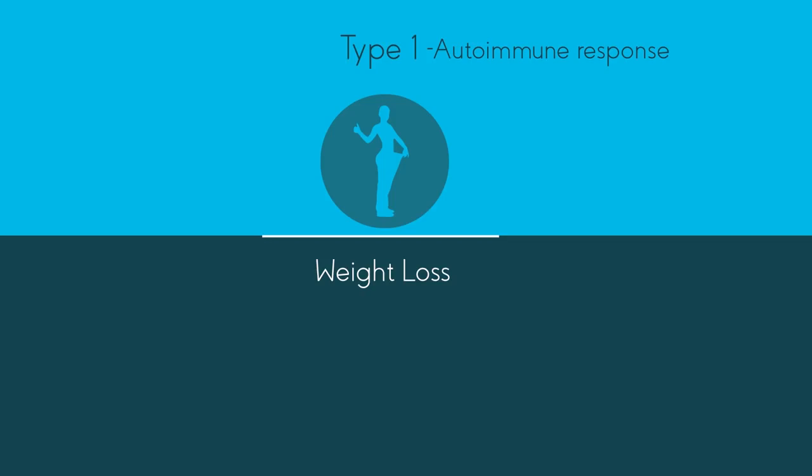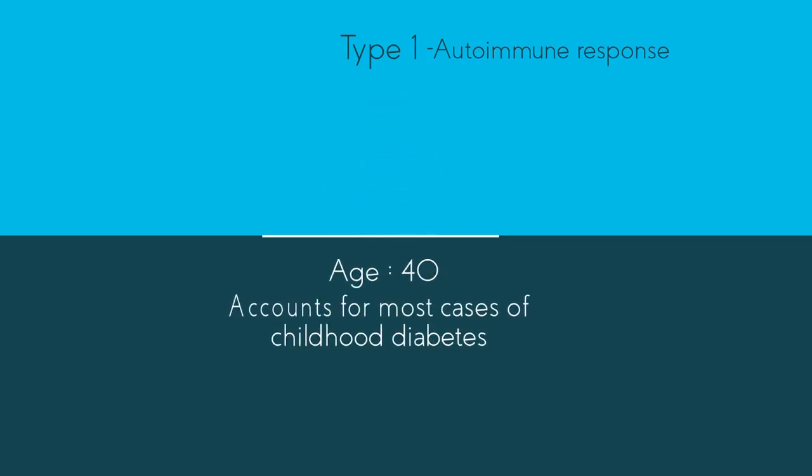Whilst type 1 diabetes can appear at any age, it usually appears before the age of 40, and type 1 accounts for most cases of childhood diabetes.